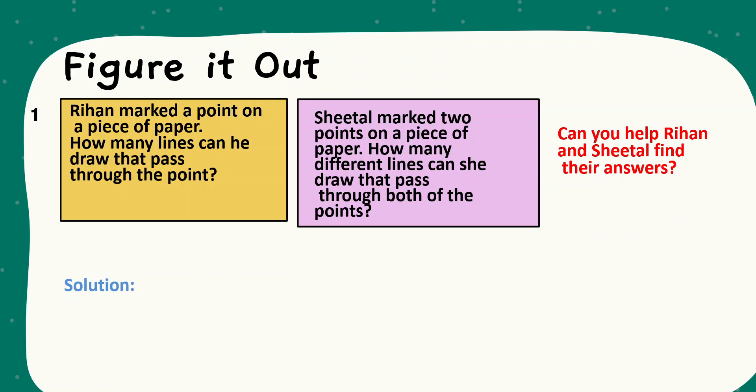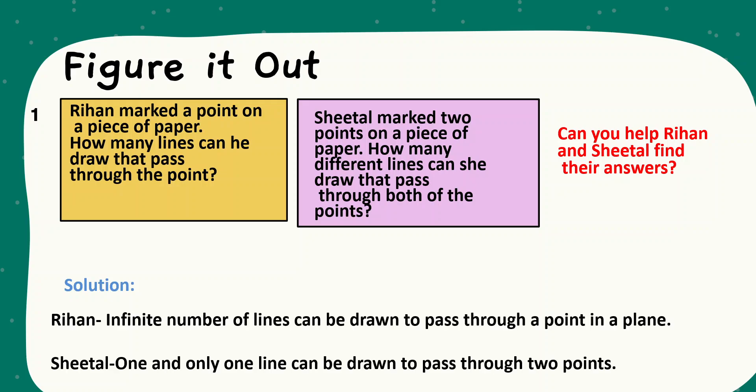So if Rihan has marked only a point, how many different lines can be drawn to pass through a point in a plane? For example, this is Rihan's point. If this is R as a point, then through this point, we can draw infinite number of lines.